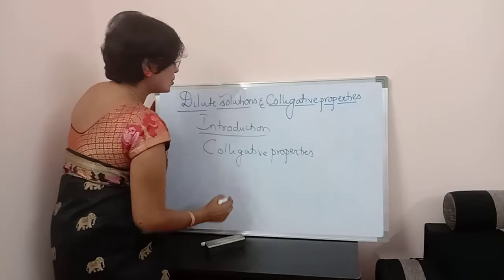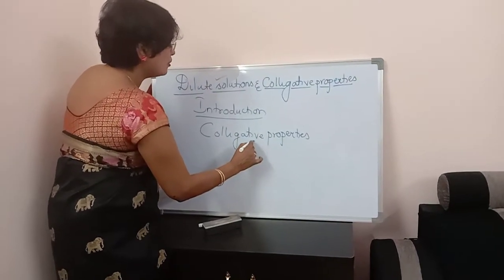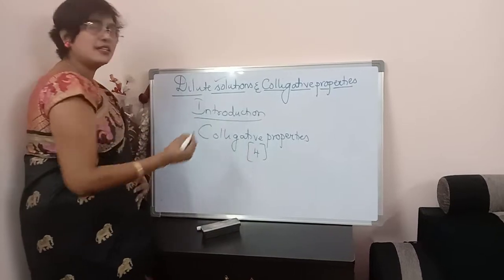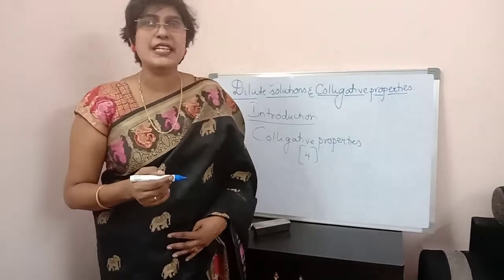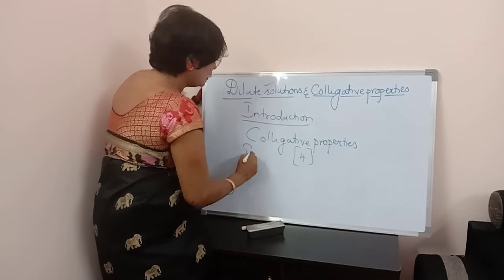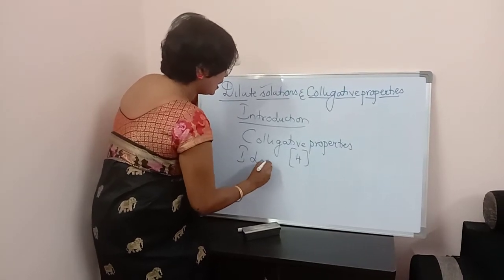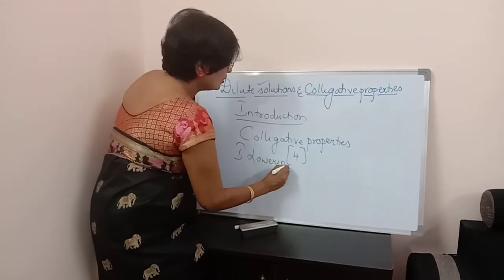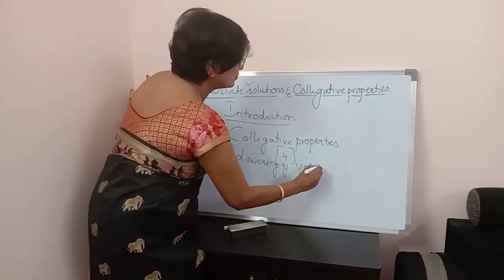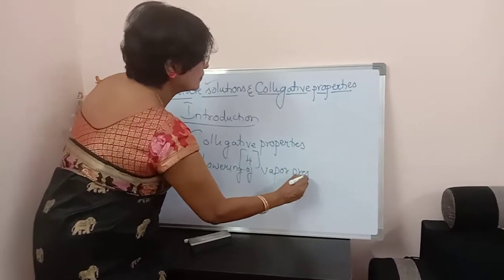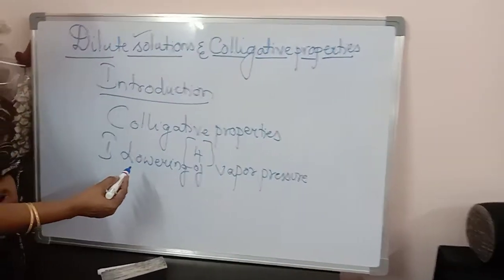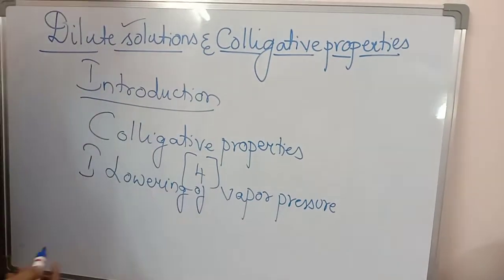Under this we have four colligative properties students — total four colligative properties. So to begin with, number one, we will be learning about lowering of vapour pressure. What is it? Lowering of vapour pressure.